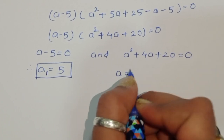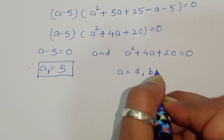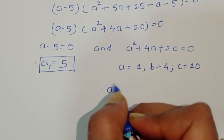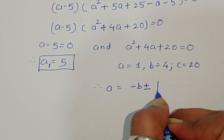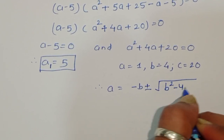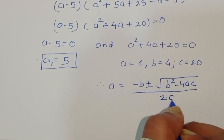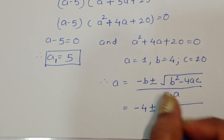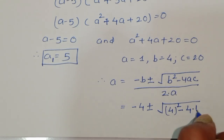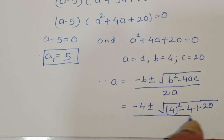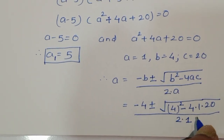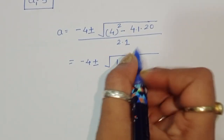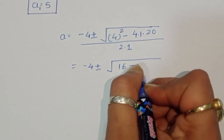For the quadratic a square plus 4a plus 20 equals 0, the coefficients are: a equals 1, b equals 4, and c equals 20. Using the quadratic formula, a equals minus b plus or minus square root of b square minus 4ac, all over 2a. Substituting: minus 4 plus or minus square root of 4 squared minus 4 times 1 times 20, over 2 times 1.